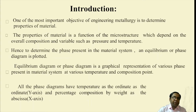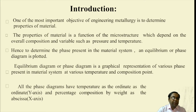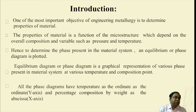Regarding the introduction, you must understand that the objective of engineering metallurgy is to determine the properties of material. Two major variables are pressure and temperature, and thus it is to determine the phases present in the material system. An equilibrium or phase diagram is plotted — it is a graphical representation of various phases present in a material system at various temperature and composition points.